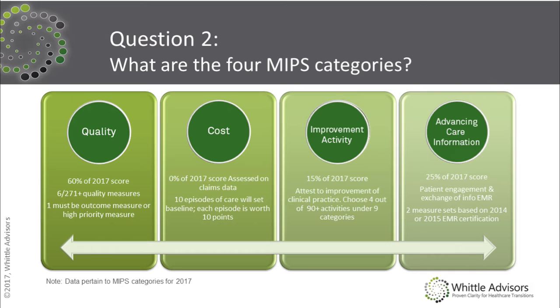The last category is advancing care information — the category that most closely aligns with meaningful use. It is 25% of the 2017 score and is designed to increase patient engagement and exchange of information across electronic health records. There are two measure sets that fall under advancing care information, aligned with your EHR certification — either 2014 or 2015 certification. Once you have the individual categories mapped out for a strategy, you'll want to think about how that composite score will be built.